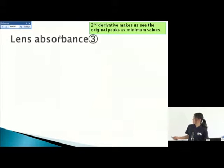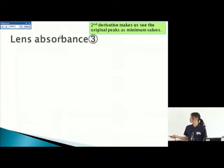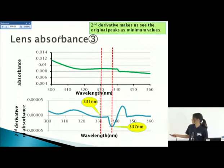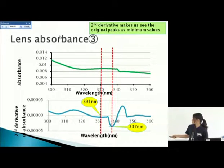The second derivative allows us to see the original peaks as minimum values. For example, this peak shows a maximum value. This is the original data — this peak corresponds to the very loose arch, and these peaks correspond to this part of the spectrum.